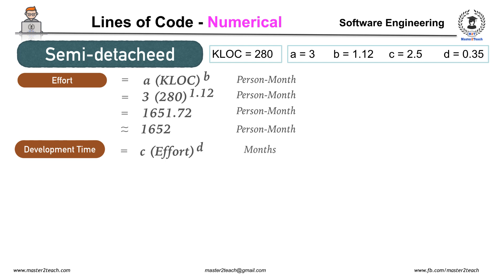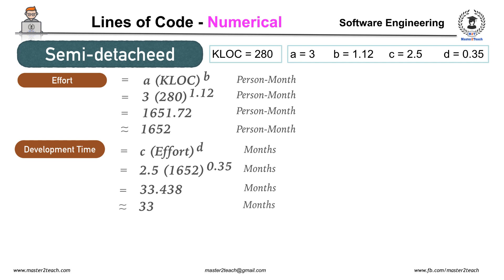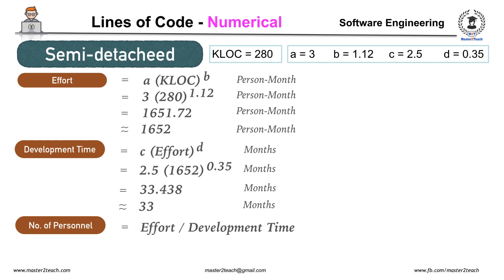Development Time = c × Effort^d = 2.5 × 1652^0.35 months, which equals 33.438 months, approximately 33 months. Number of Personnel = Effort ÷ Development Time = 1652 ÷ 33, which equals approximately 50 persons.